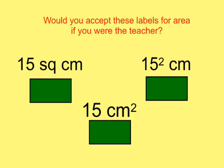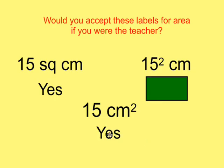Now, if you were the teacher, would you accept these labels when dealing with area? Would you take 15 square centimeters as a label? Well, sure, that's perfectly fine. What about 15 square centimeters? Yeah, that's fine as well. That's just a different way of writing this. Now, what about 15 squared centimeters? This is a common mistake that students will make. 15 squared is 225. This would be 225 centimeters. So that would not be an acceptable label.